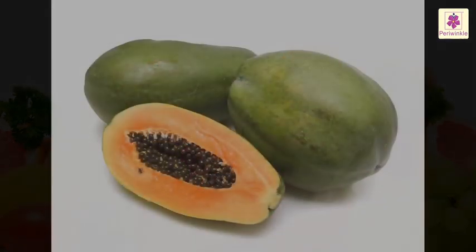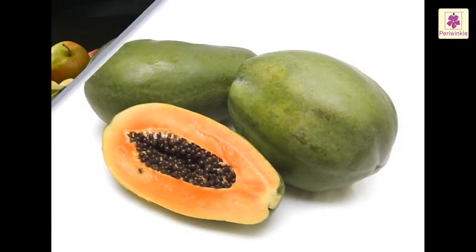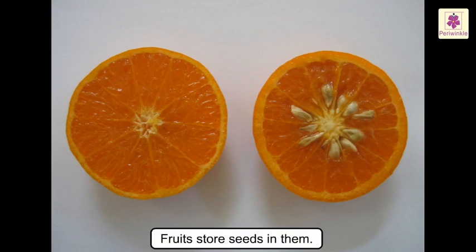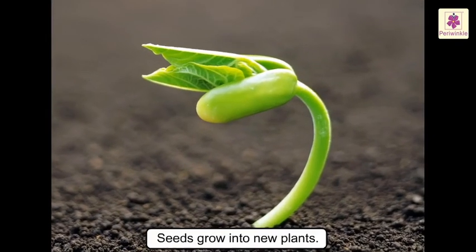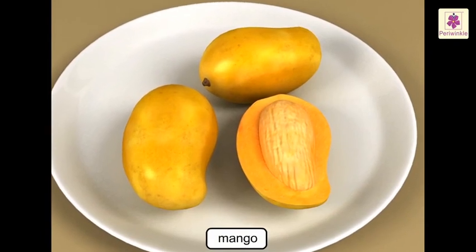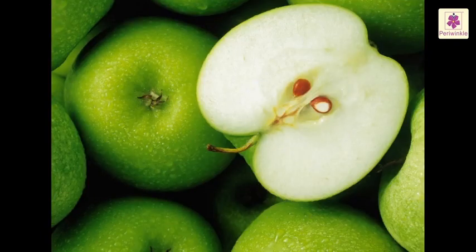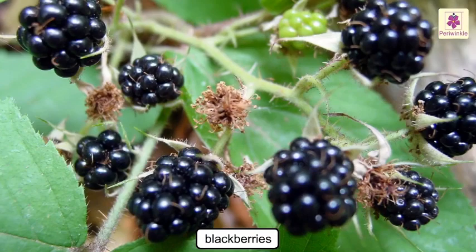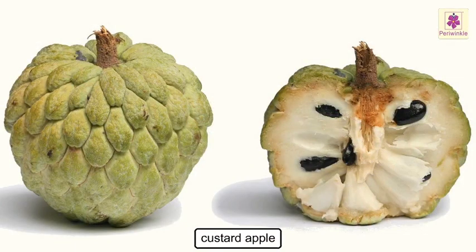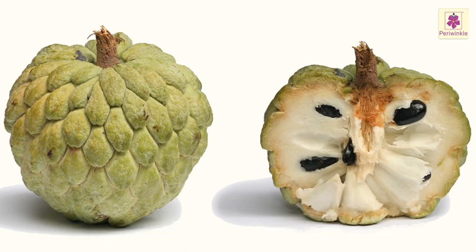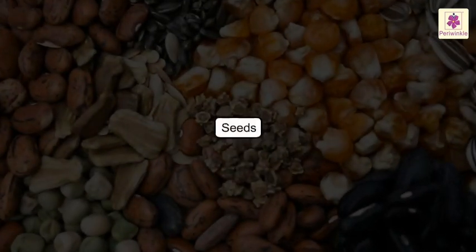Any structure that holds a seed or seeds is called a fruit. Fruits store seeds in them, and the seeds grow into new plants. Some fruits like the mango have only one seed, while others like apple and watermelon have many seeds. Blackberries and custard apples are compound fruits, as each seed is contained in its own parcel of sweet flesh — lots of these parcels combine to form the fruit.